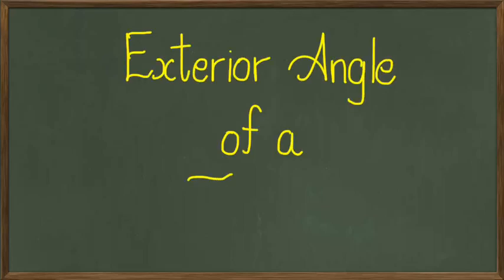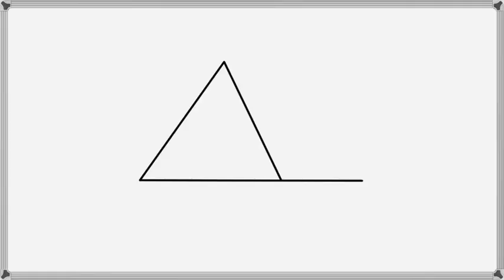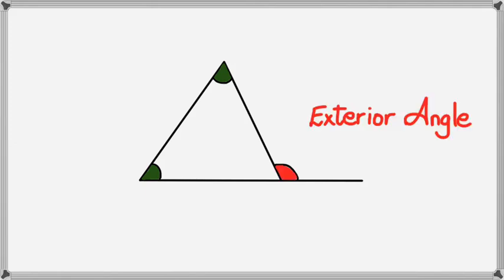We're going to be looking at exterior angles of a triangle in this session. Let me show you where the exterior angle of a triangle is. When you have a triangle like this with one little line sticking out, let's color these in first.